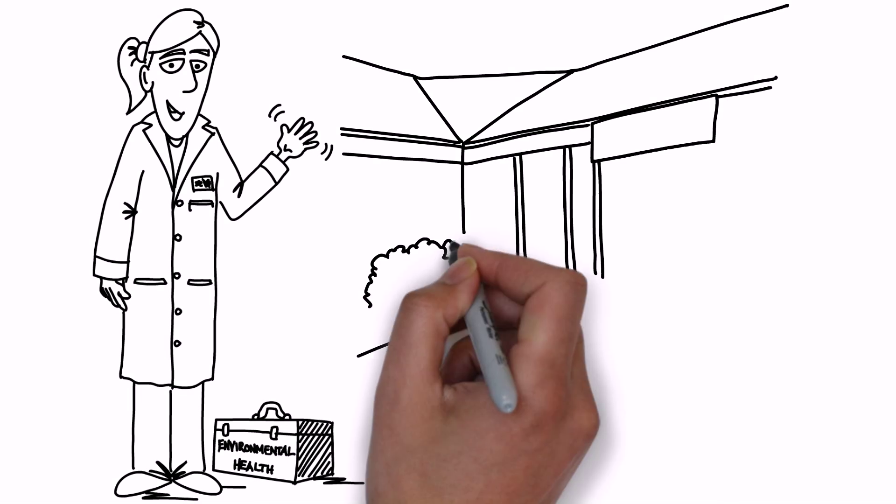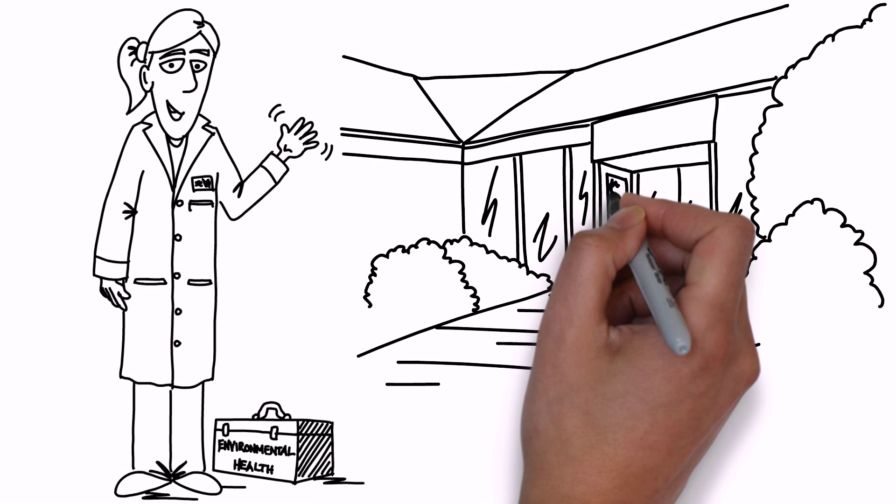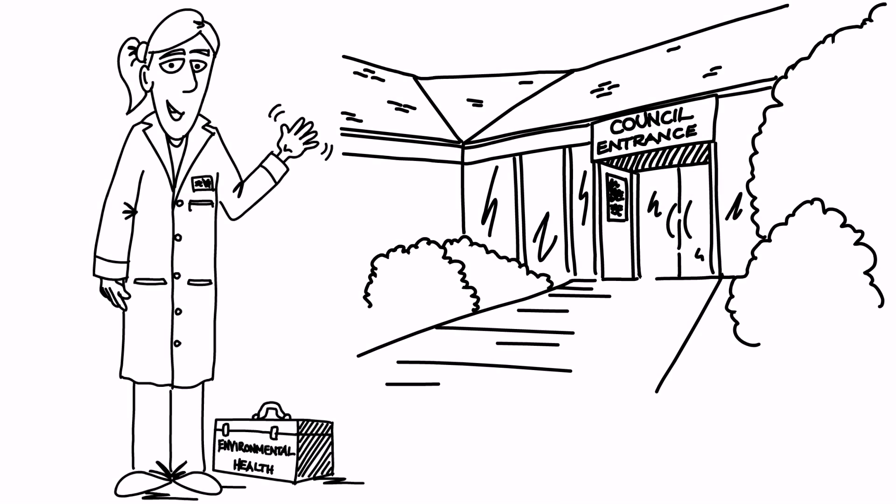Janet is an environmental health officer working for a rural unitary authority. She's responsible for food safety, business compliance, and environmental pollution complaints.